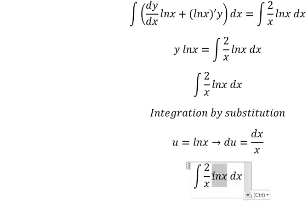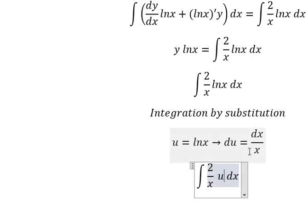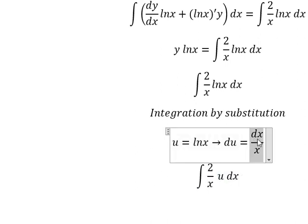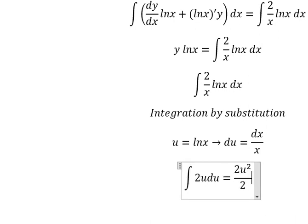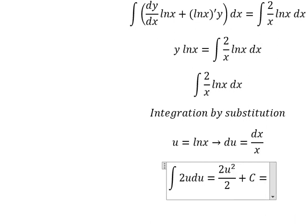First derivative of this one, so we change lnx into u. For this one, dx over x, we change to du. The integration of u gives u squared over 2 plus c. For u, that's lnx.